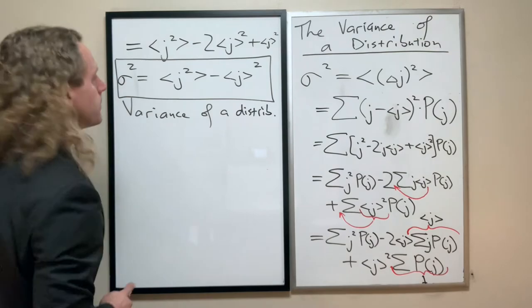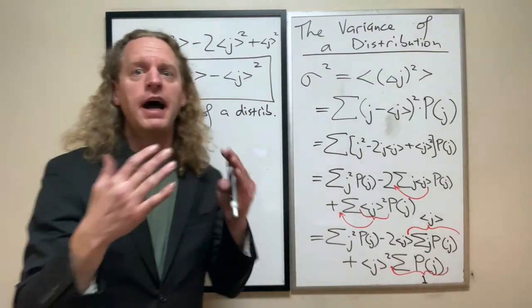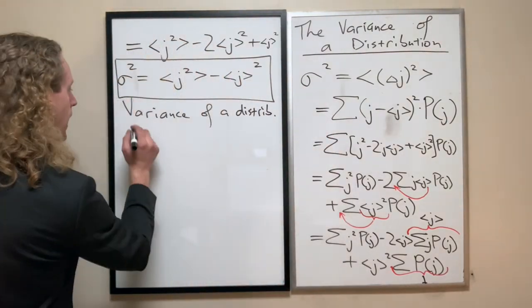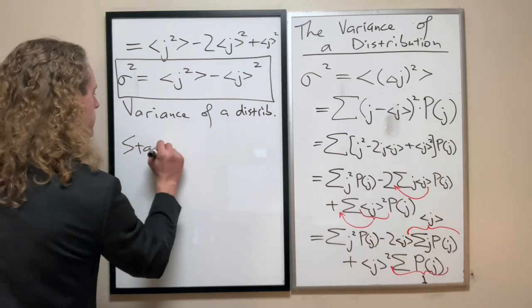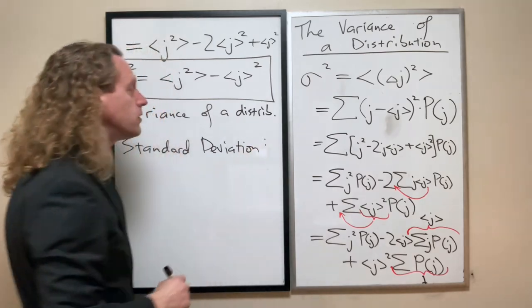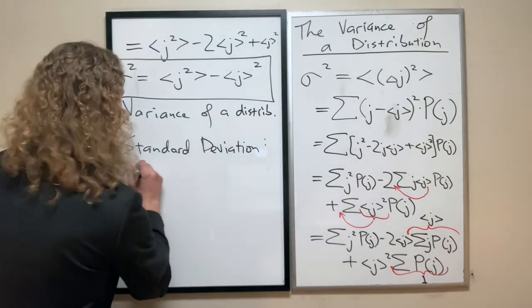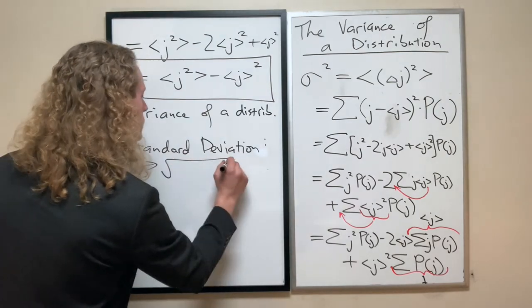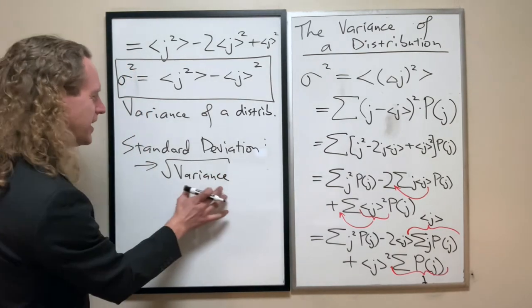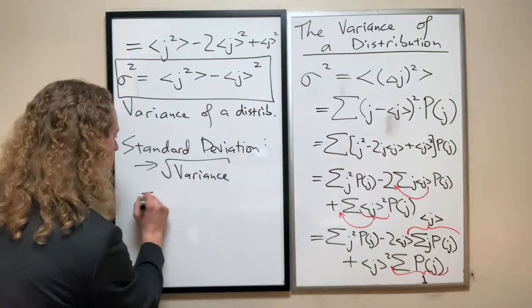And finally, the thing that most of us are taught is the best measure of how spread out a function is, is what we call the standard deviation. The standard deviation, the statistically well-defined quantity, is literally just the square root of the variance. And given that the variance we're writing very conveniently is sigma squared, is just sigma.